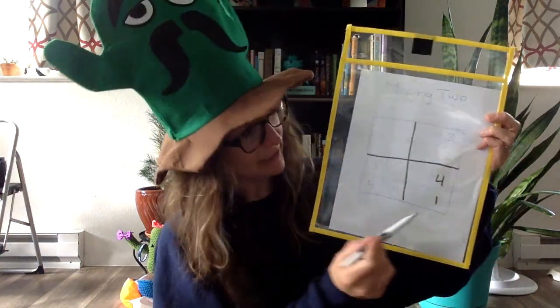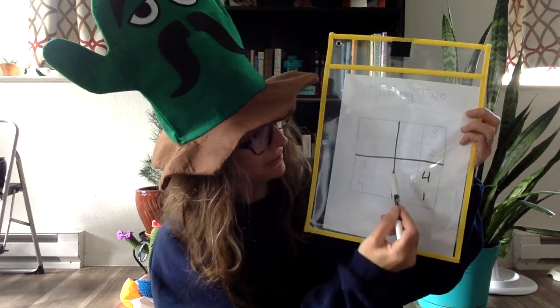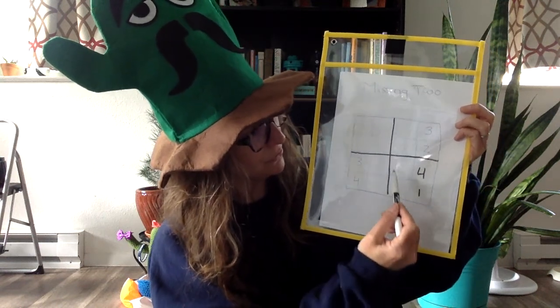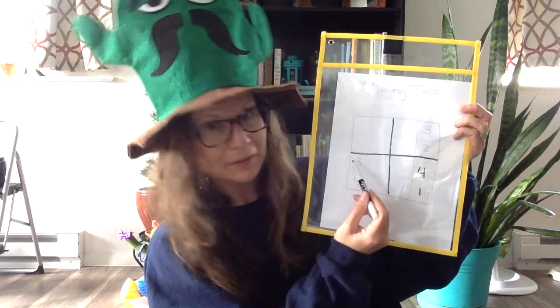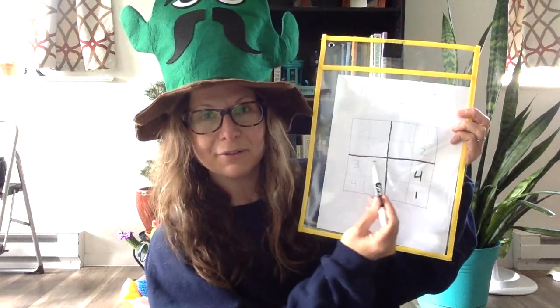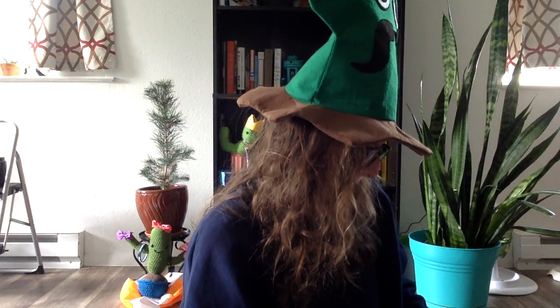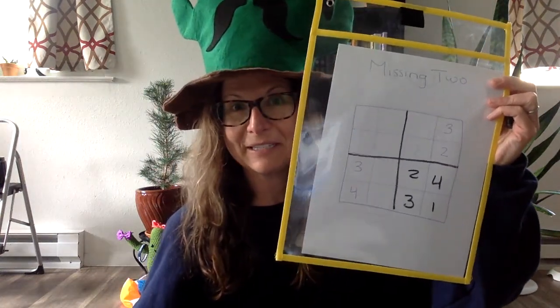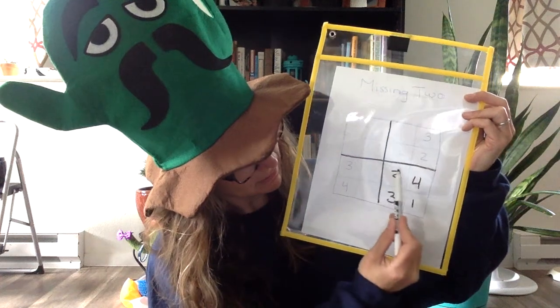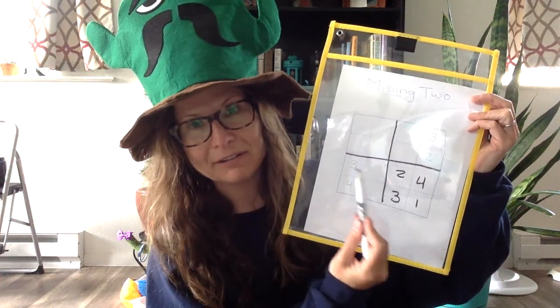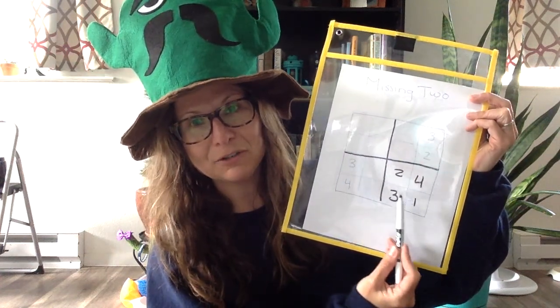And now look, I know I'm missing 2 here — a 2 and a 3. And there's already a 3 there, so the 3 can't go there. Do you see something easy? Look at this row! I'm missing a 1! I'm missing a 2!